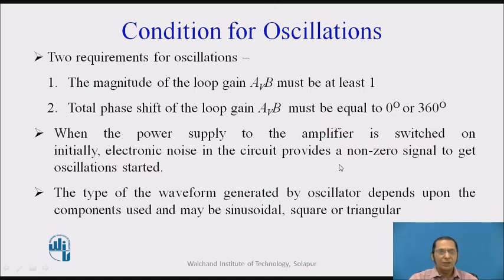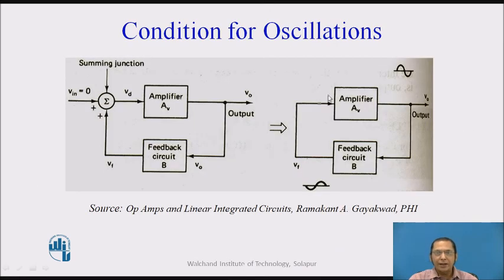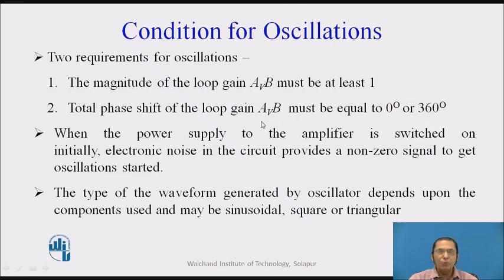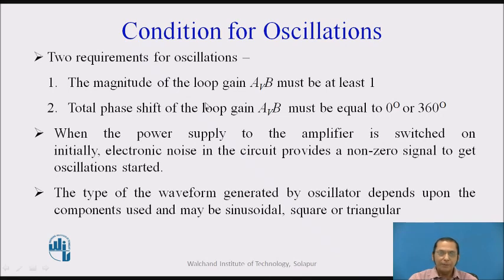What are the conditions for oscillation? There are two conditions that must be met. First, the magnitude of the loop gain — the total gain Av multiplied by the feedback factor beta — must be at least equal to 1. Second, the total phase shift of the loop gain Av·beta must be equal to 0 degrees or 360 degrees, indicating positive feedback. When the power supply is switched on, electronic noise provides a non-zero signal and oscillations start. The type of waveform generated depends upon the components used and may be sinusoidal, square, or triangular.